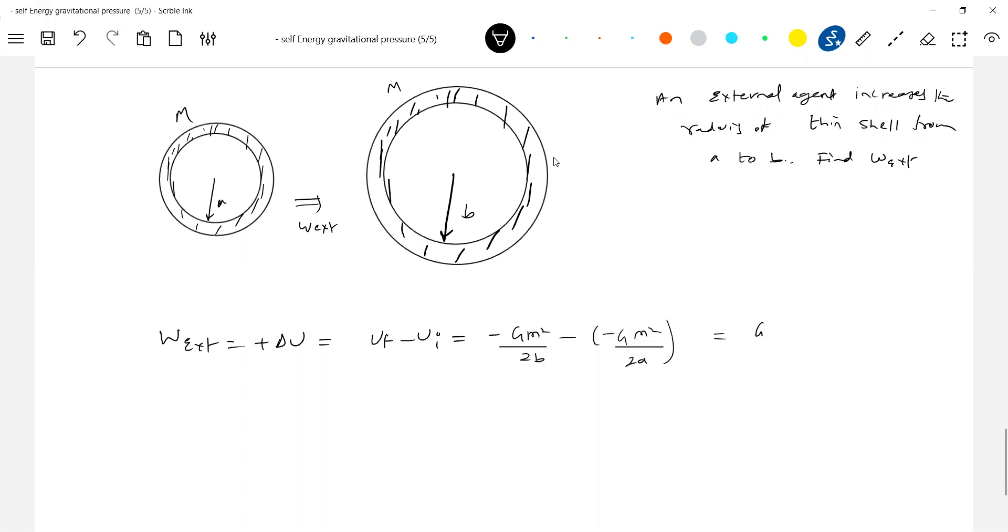Solving this gm squared by 2, 1 by a, minus 1 by b. Or gm squared by 2ab, b minus a. This much of work the external agent should do.